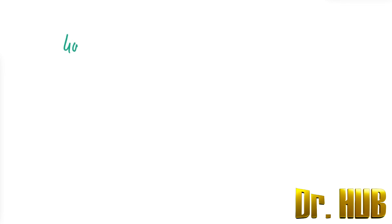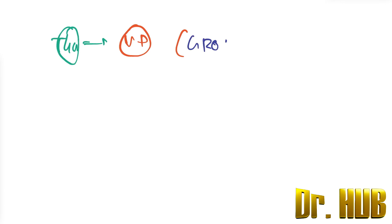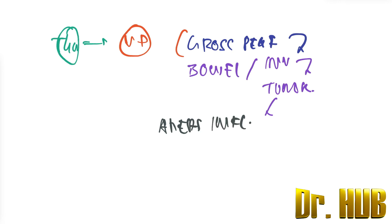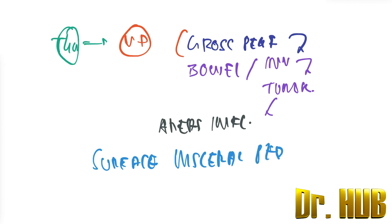As per the 8th edition, T4a means it invades through the visceral peritoneum. This includes gross perforation of the bowel and invasion of the tumor through areas of inflammation to the surface of the visceral peritoneum.